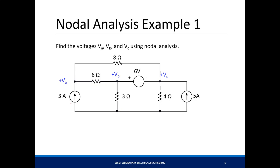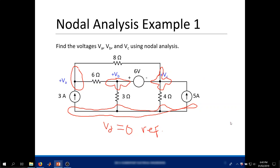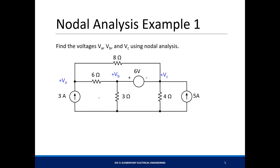First, identify the nodes. We have node A, node B, and node C, and another node at the bottom which we'll call node VD — but we set it to zero volts. We call this the reference node or ground node, the node at which you have zero potential. So now we need to find the voltages VA, VB, and VC using nodal analysis.